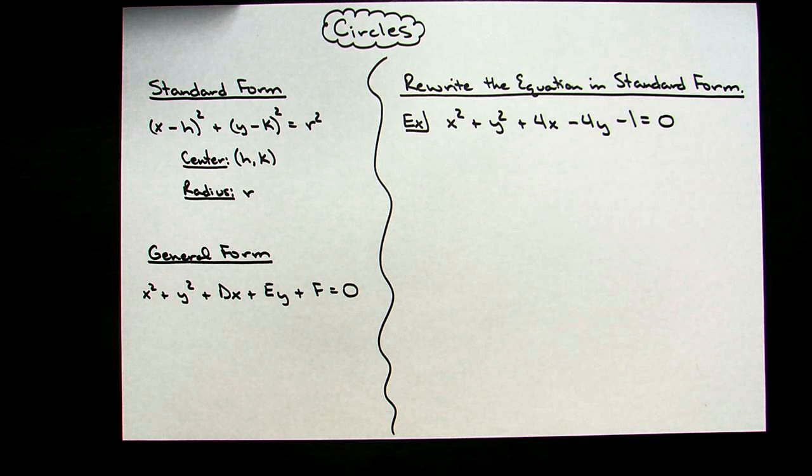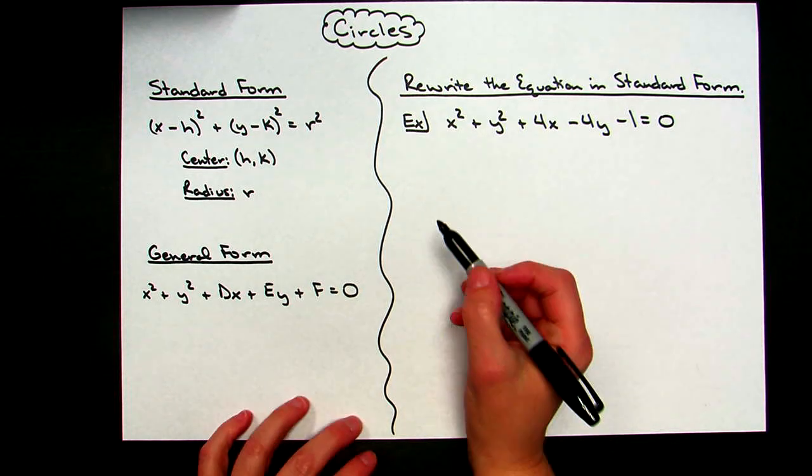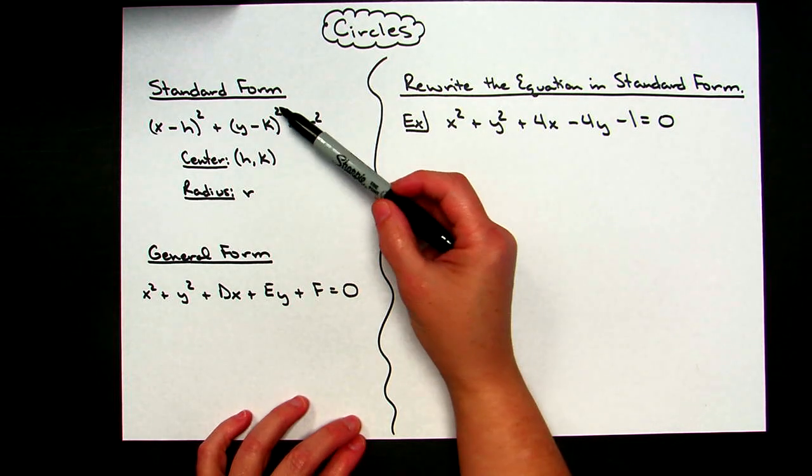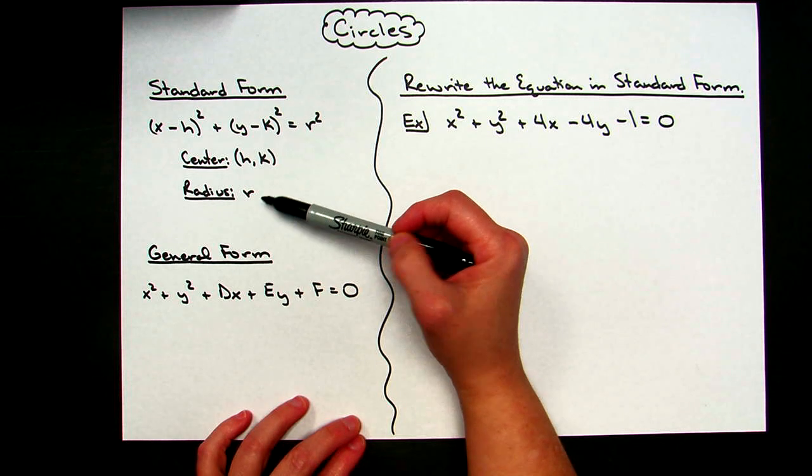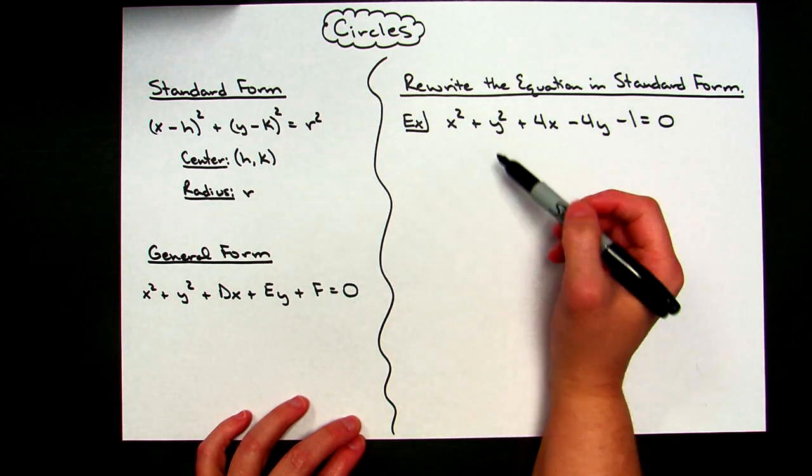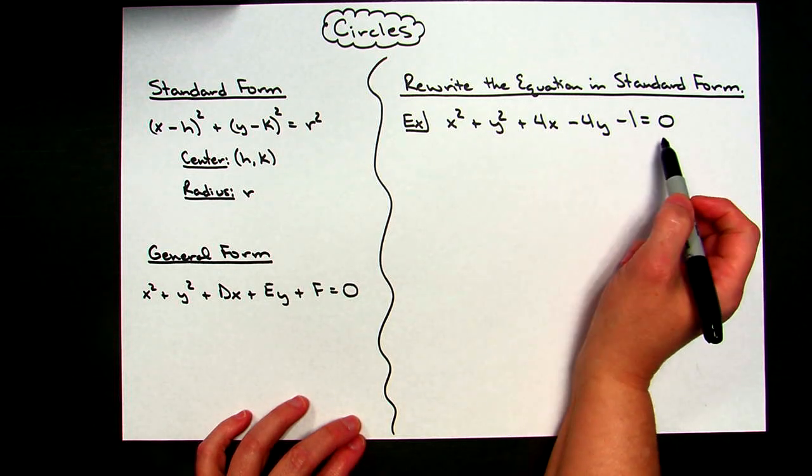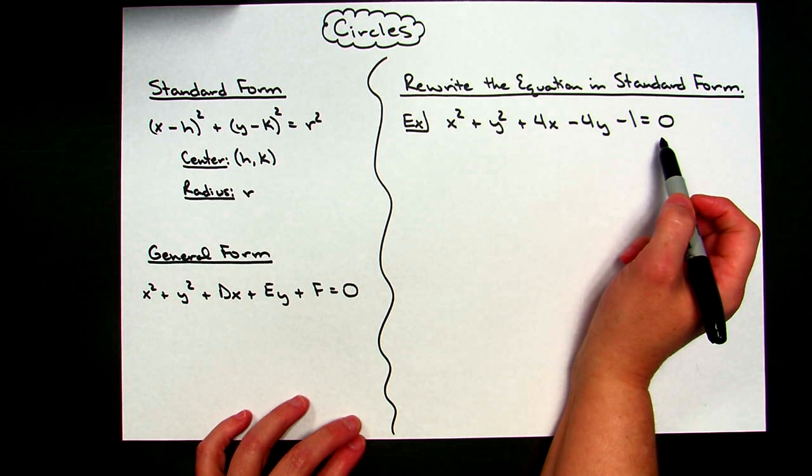Today we're going to take a look at some circles. We're going to review what a circle in standard form looks like, what it looks like in general form, and then we're going to take a general form circle and rewrite that equation so that it is in standard form.